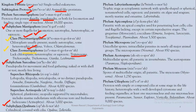Zoomastigophora includes animal-like flagellated mastigophorans. In Phytomastigophora, plant-like mastigophorans are found — examples include Euglena, Volvox, and Chlamydomonas. In the subphylum Sarcodina, there are organisms that move by pseudopodia, like Amoeba. These include Superclass Rhizopoda and Superclass Actinopoda.